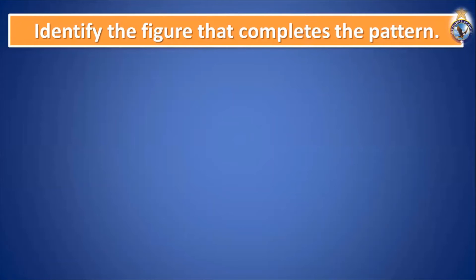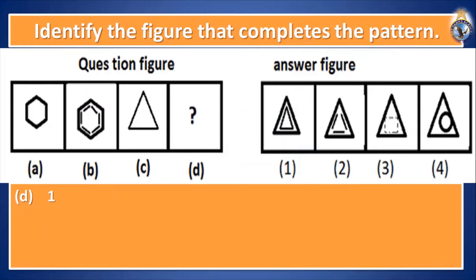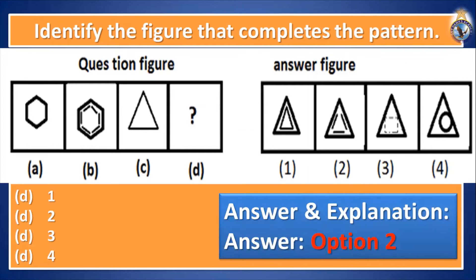You are right — very good! Moving to the next question. Identify the figure that completes the pattern. A and B are related and you have to make the same relation for C and D. C is given and you have to select D from options one, two, three, and four. A and B are related and D must be selected from the given figures. Your answer was two — option number two, very good!